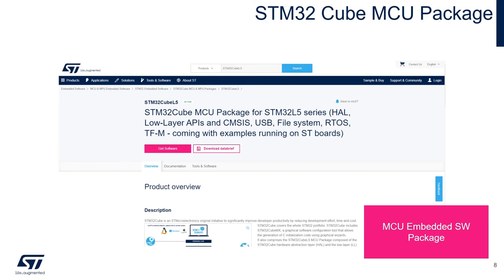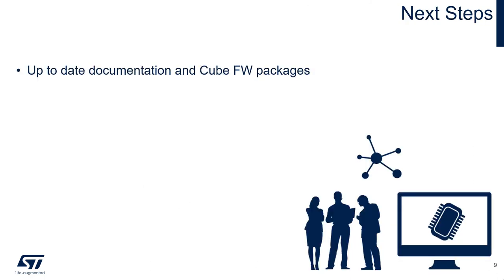Every microcontroller family comes with a designated STM32 Cube firmware package. In this single package you can find a rich variety of resources. This includes, but is not limited to, plug-and-play example projects for several different boards, applications, demonstrations, drivers, and a wide variety of libraries. To find and download your microcontroller's cube package, simply search for STM32 Cube with the microcontroller's leading letter and number. Once redirected to the landing page, click on the Get Software icon.